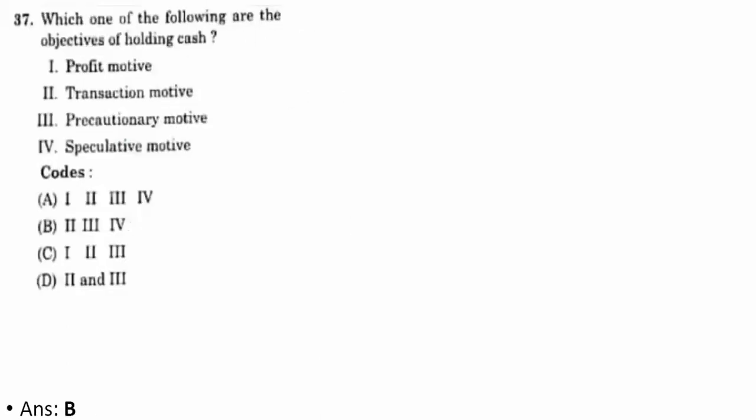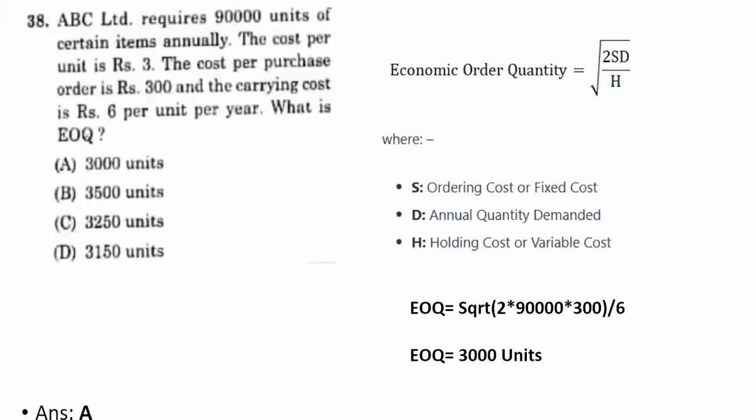Thirty-seventh question: which of the following are the objectives of holding cash? The correct option is B — options two, three, and four: transaction motive, precautionary motive, and speculative motive.